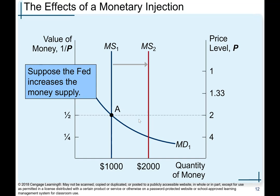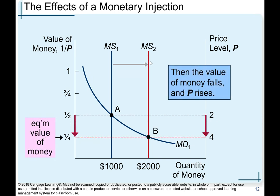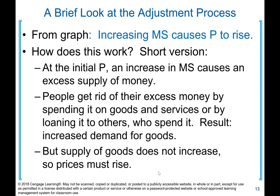Suppose the Fed increases the money supply, shifting it from MS1 to MS2. The value of money falls as we move from point A to point B — the value of money falls from a half to a quarter, but the price level increases from 2 to 4. Money supply is increasing from 1,000 to 2,000. So increasing money supply causes price to rise.